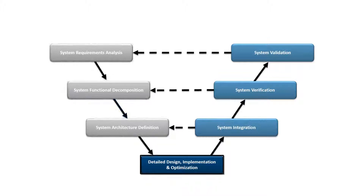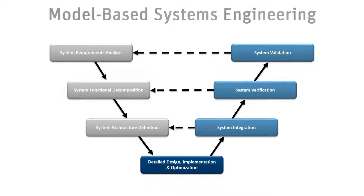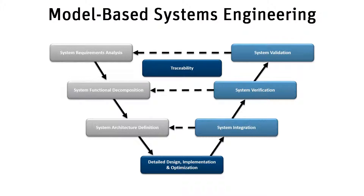Requirements and functions should be allocated to their corresponding items. Model-based systems engineering solutions provide key features to manage this process and the complexity in systems engineering — in particular, traceability with higher-level textual requirements, automated checks of design rules, and automated report generation.